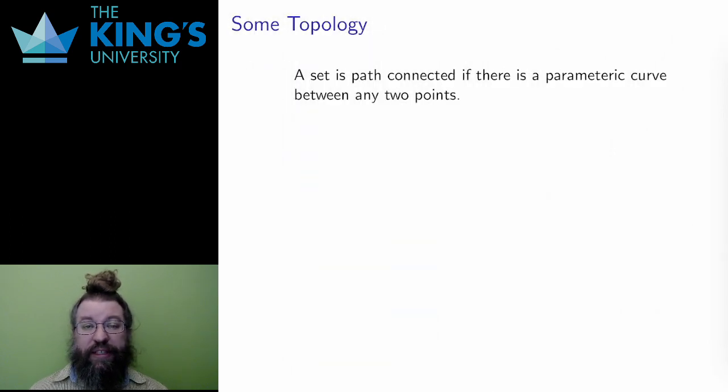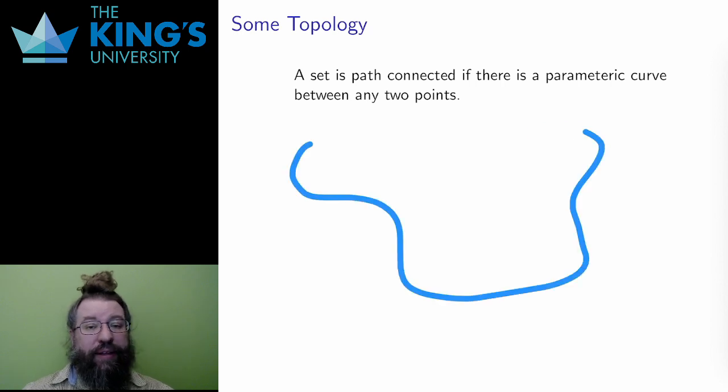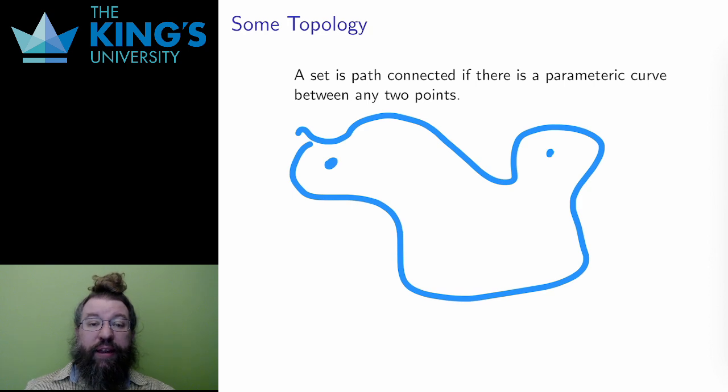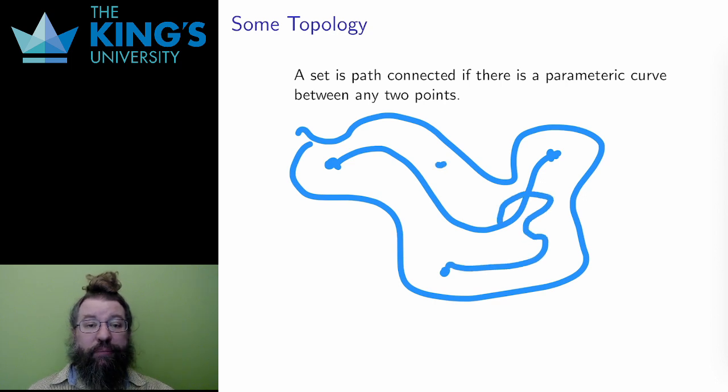One of the things that topology is concerned with is connection and separation. So let me go straight to the definition. A set in R^n is path-connected if there is a parametric curve between any two points that stays inside the set. That is, I can draw a connected curve between any two points in the set. This is a good understanding of a set being only in one piece. If I can make paths between any two points, the set forms a connected whole. It is not separated into pieces.